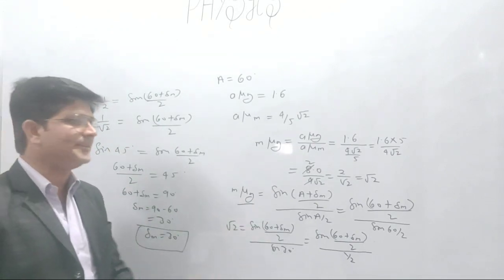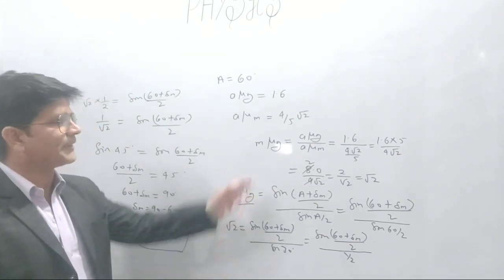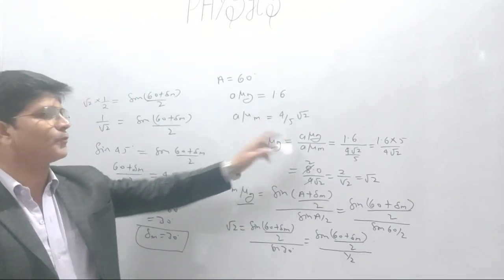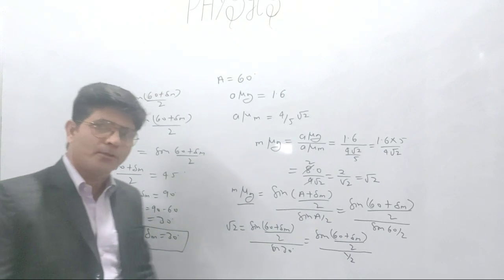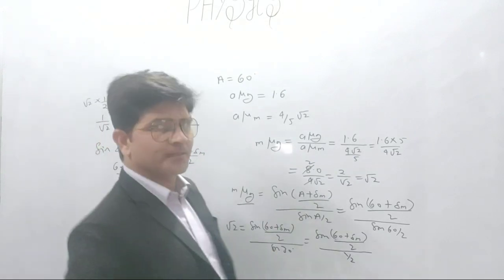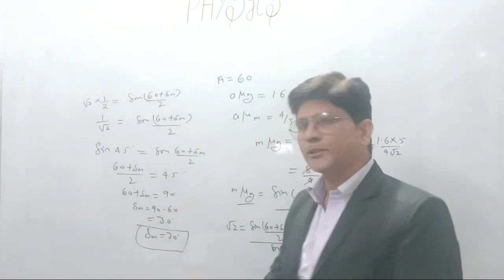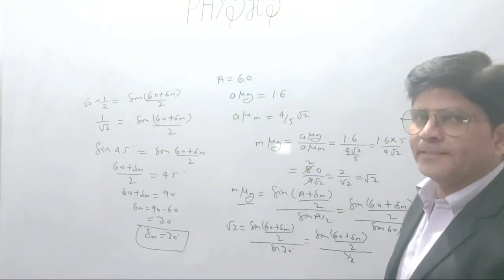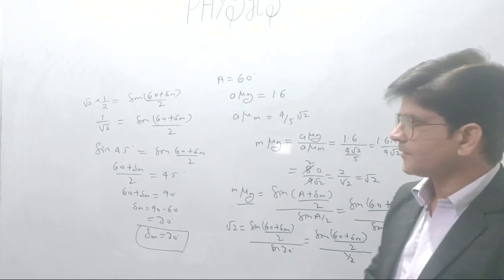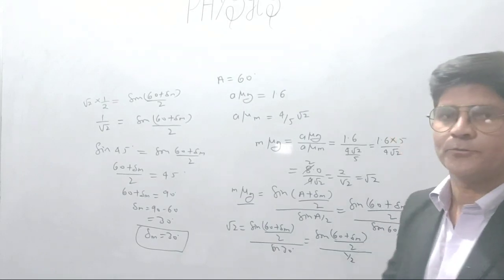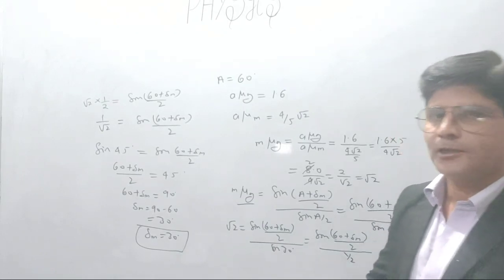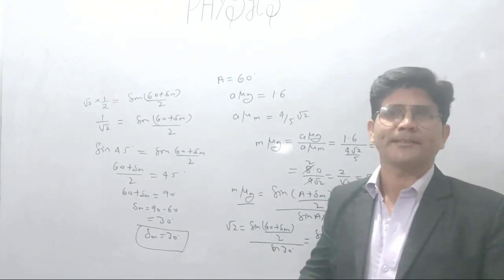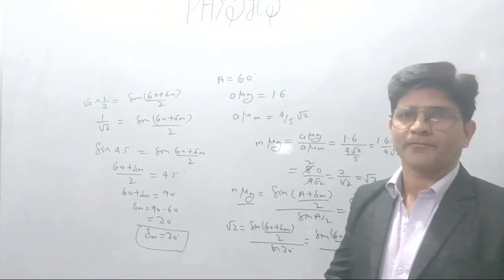The angle of minimum deviation produced by the prism is 30 degrees when it is placed in the medium having refractive index 4 by 5 root 2. That was our question for the day. We will meet in our next class.